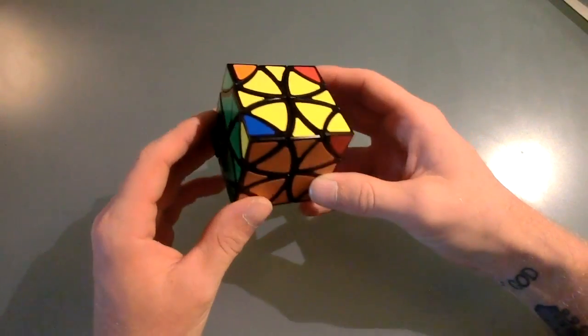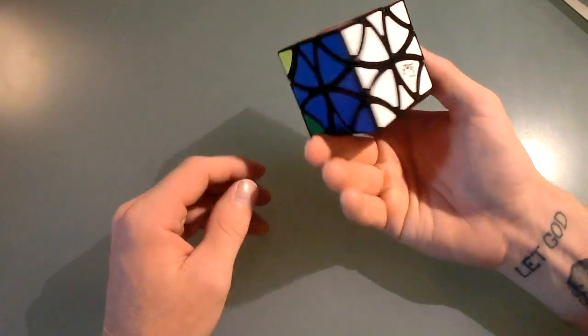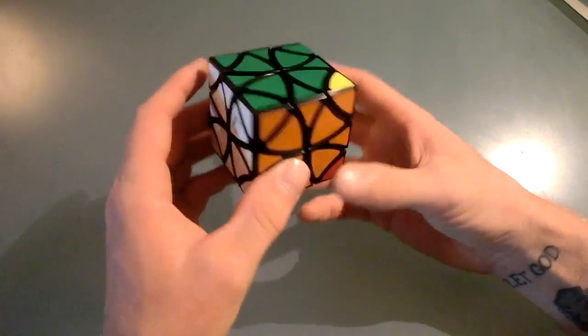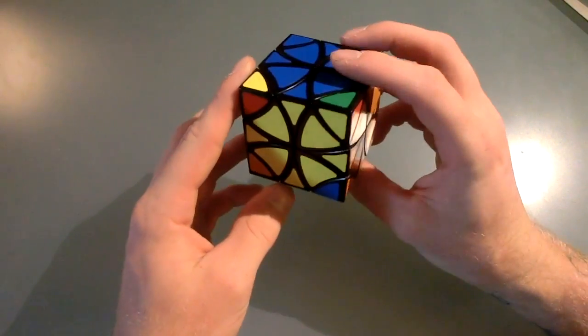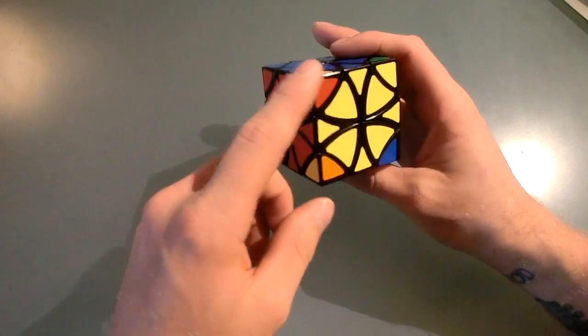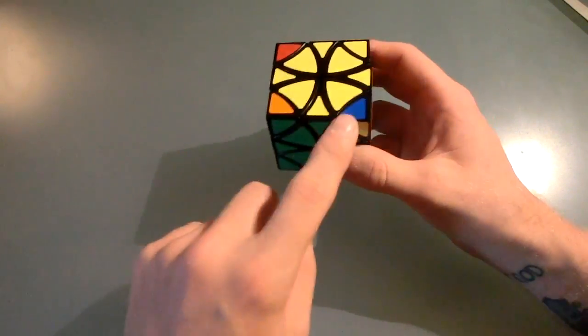Okay, I've been playing around with it for about half an hour, and I've scrambled it really good. And now I've intuitively, without being able to look at any tutorials online, I've been able to get it to this point, where these four corners are there.